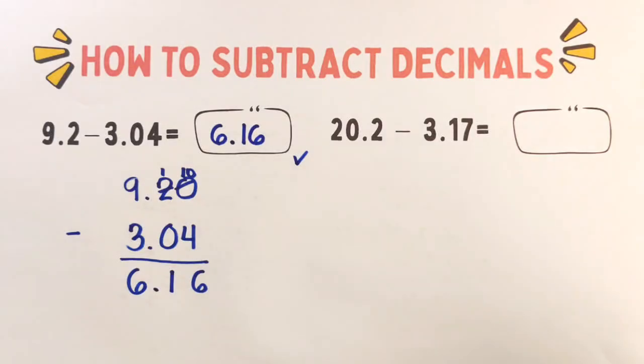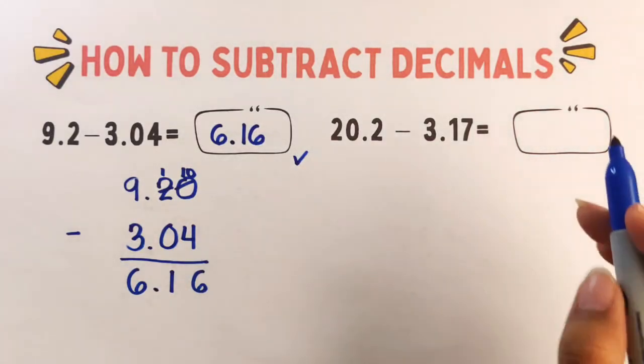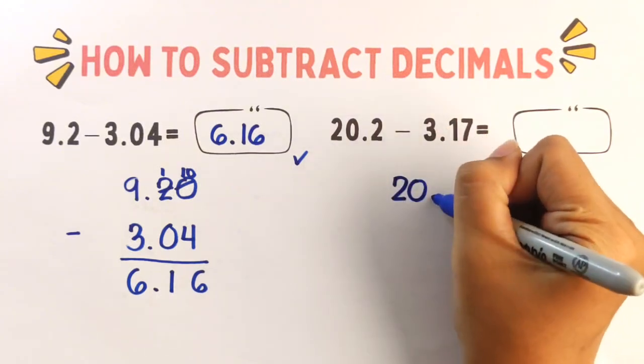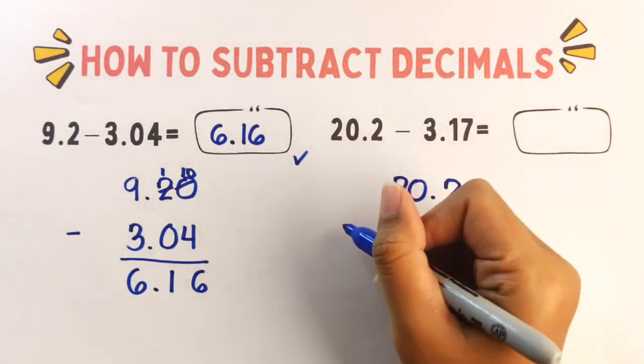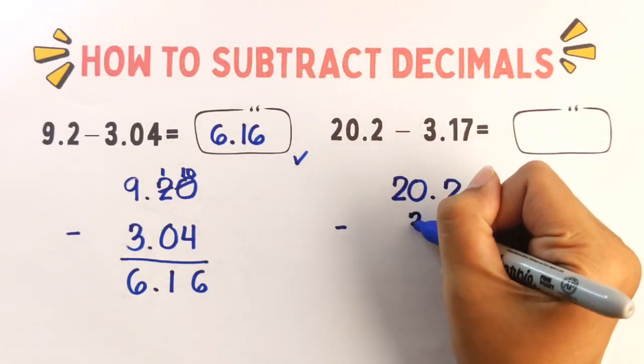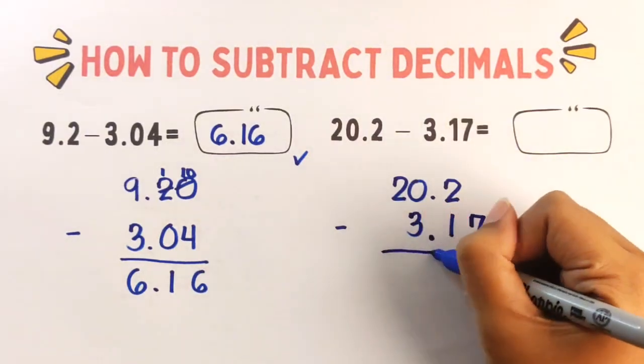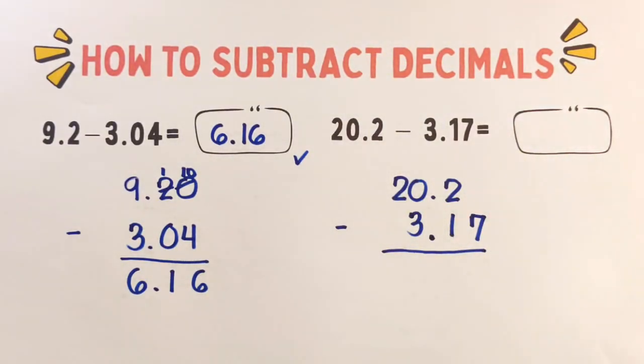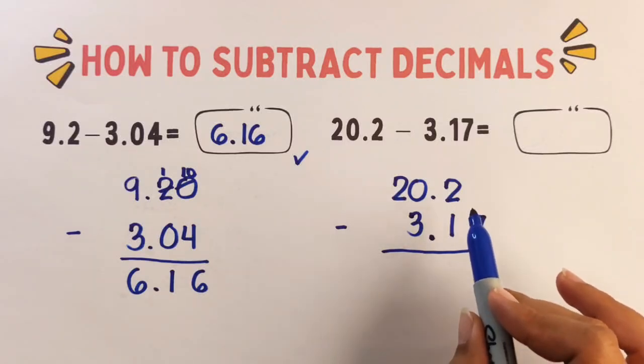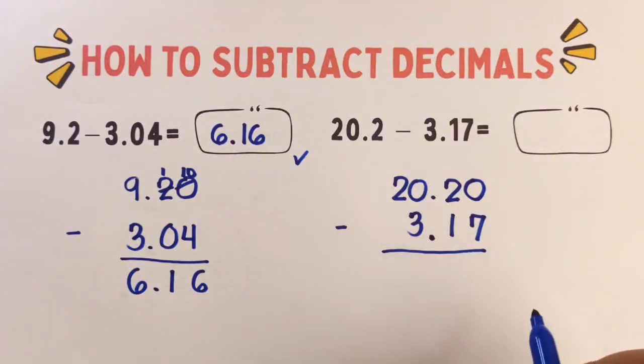Okay, next sample. Step number one, line up the decimals. Minus 3, 1, 7. So make 20.2 into 20.20 to match the decimal places.